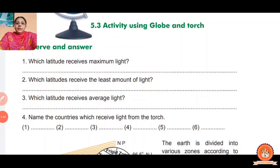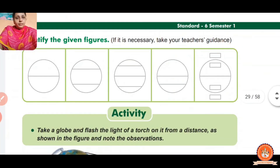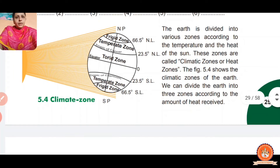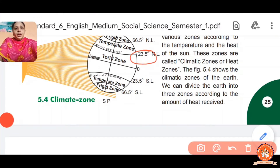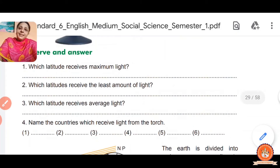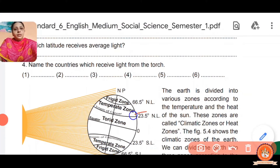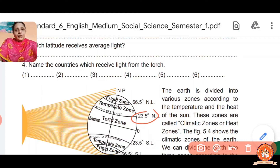Which latitude receives maximum light? Maximum light falls between 23.5 degrees north and 23.5 degrees south latitude. This zone is known as the Tropical Zone.